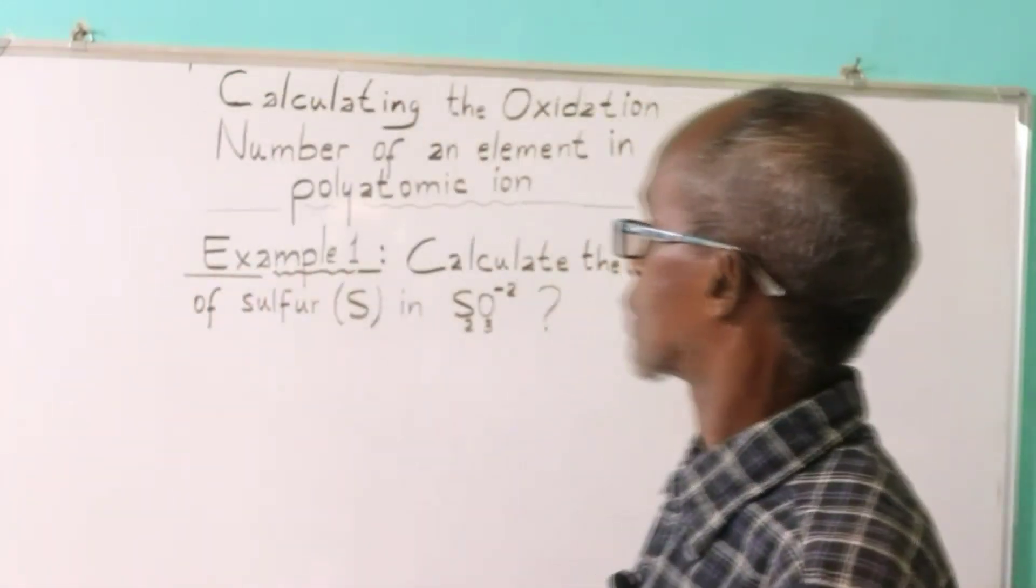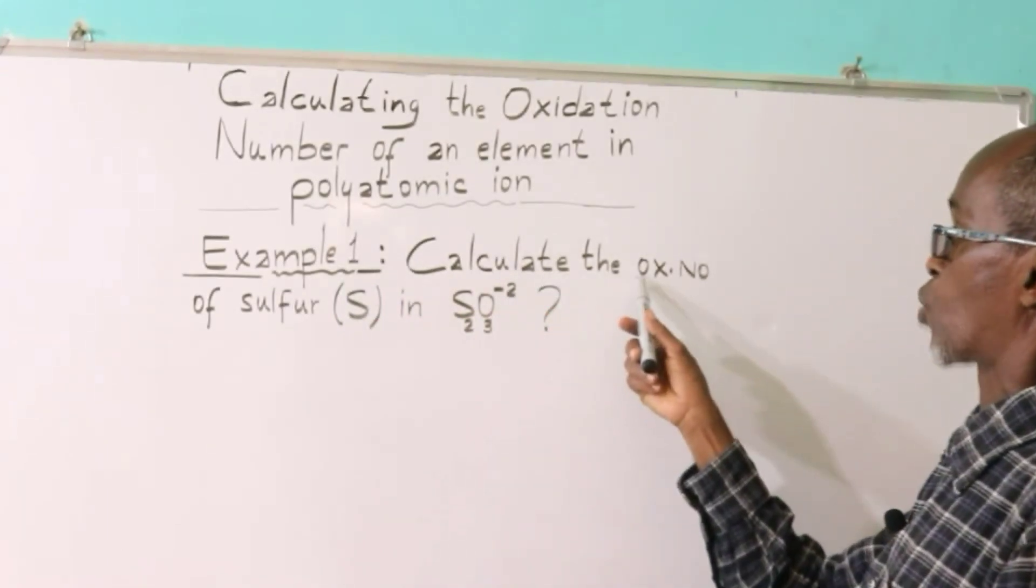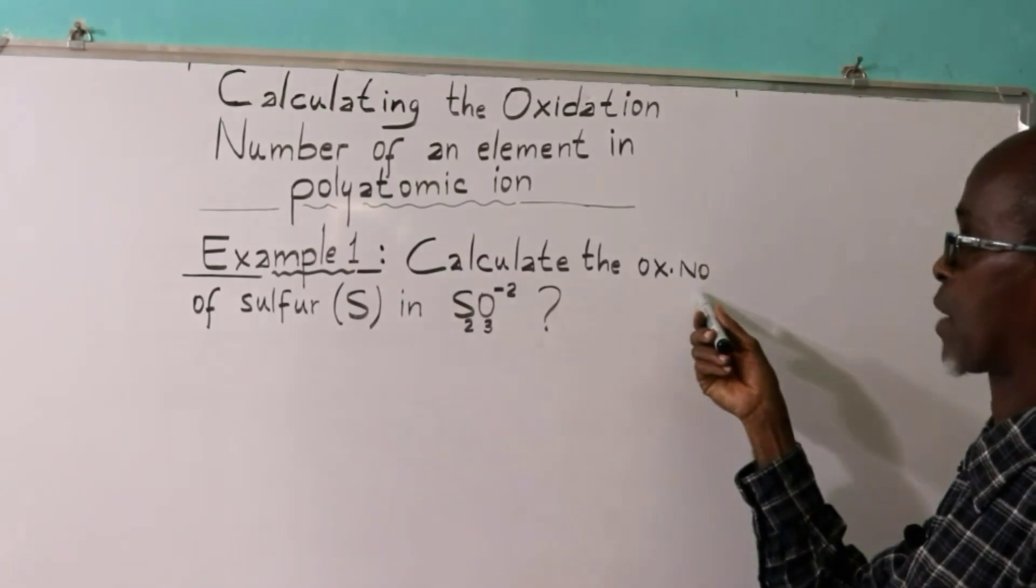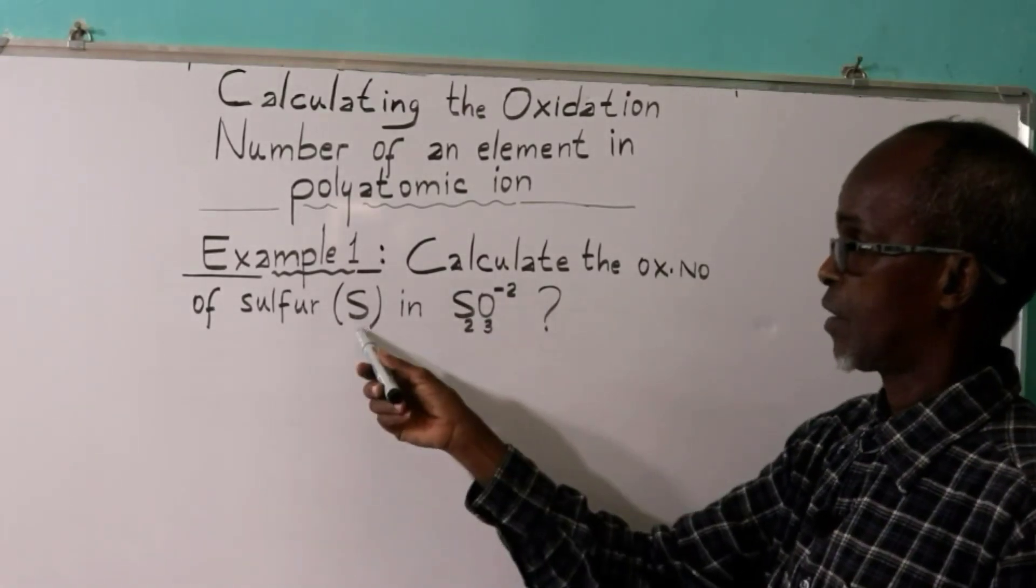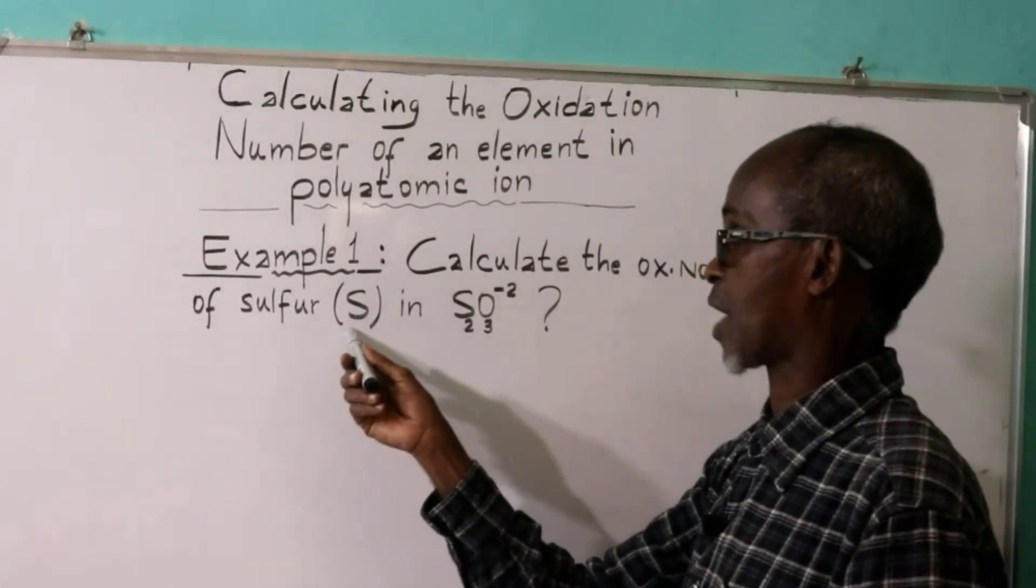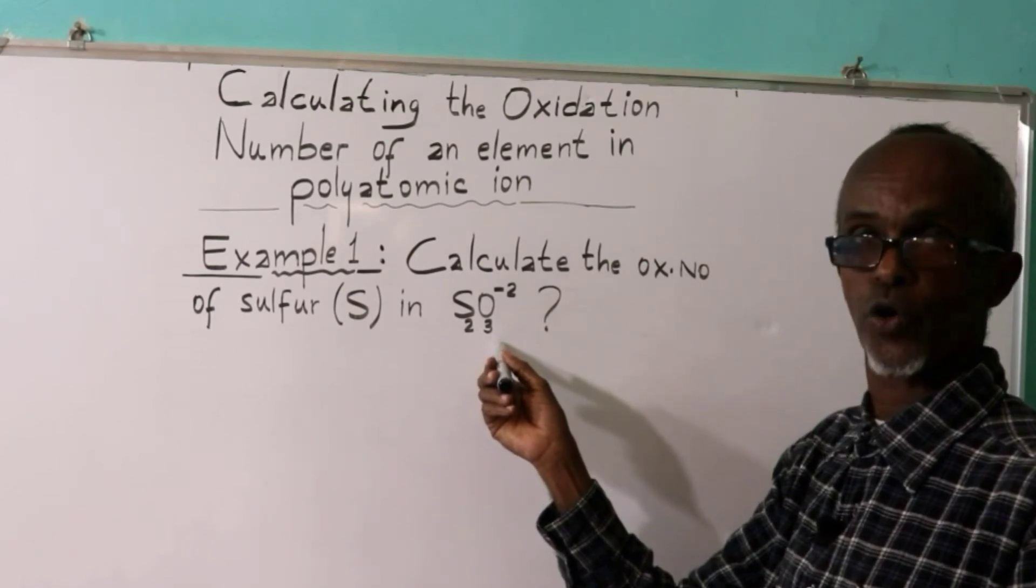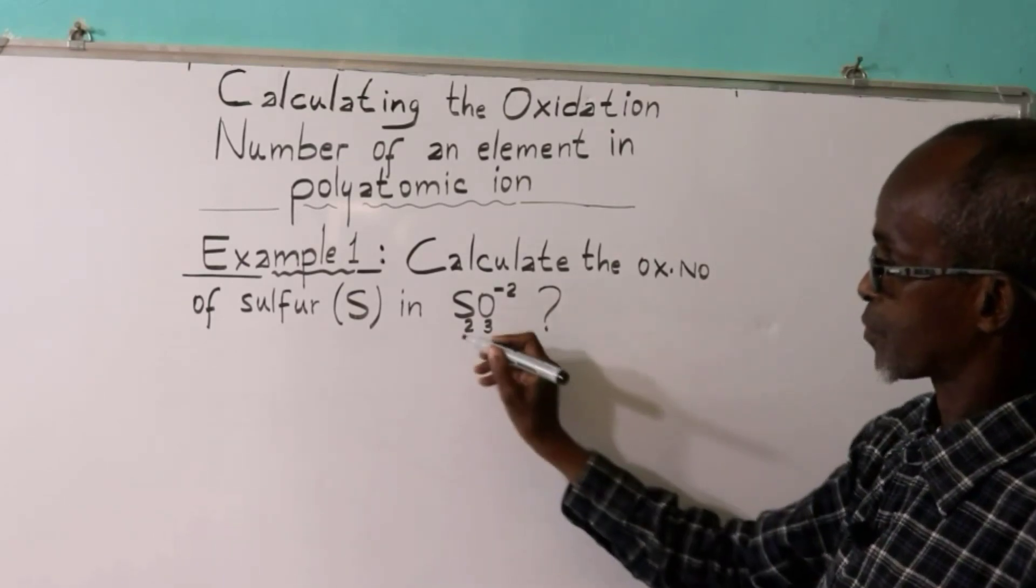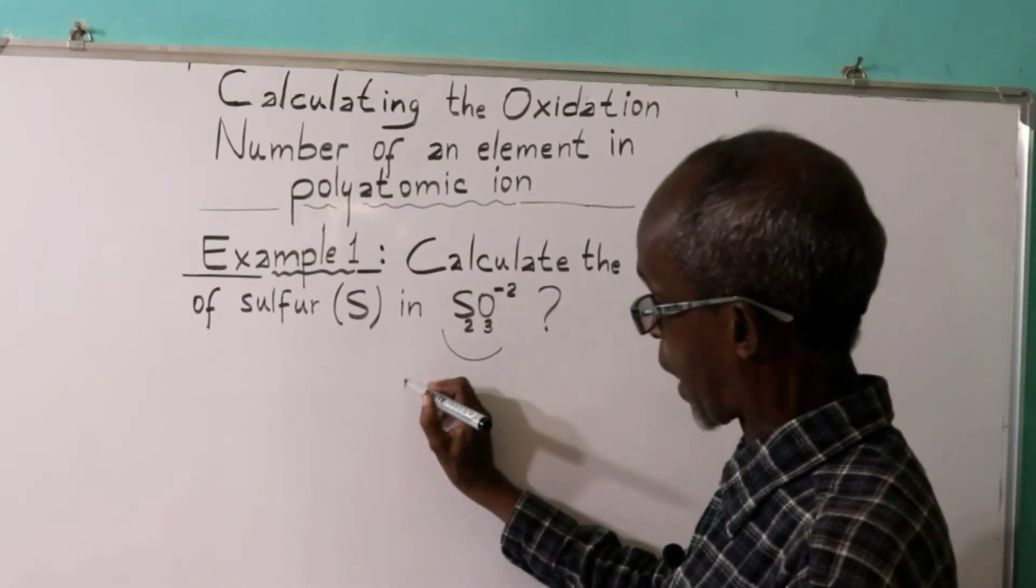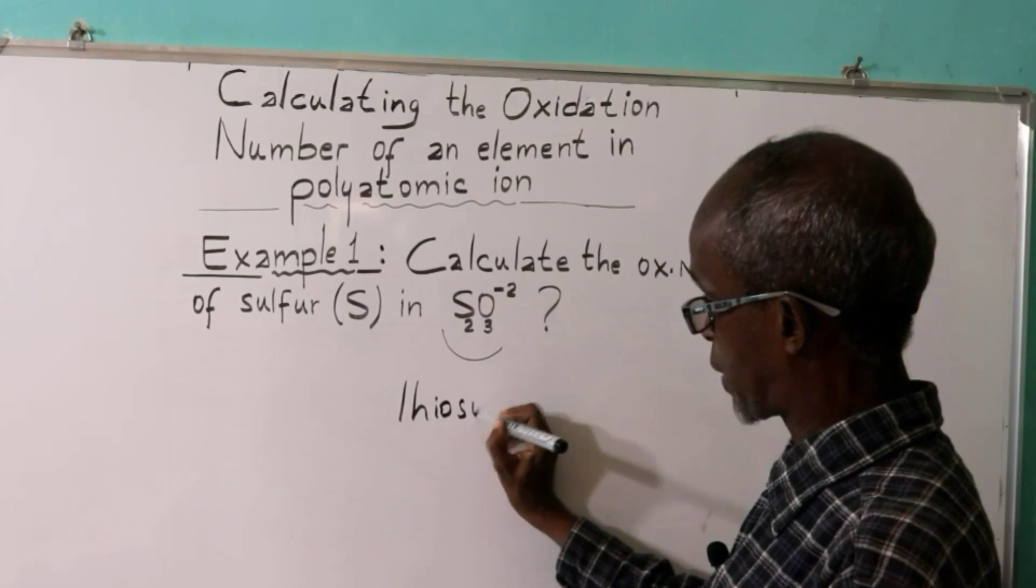Example number one: Calculate the oxidation number of sulfur in the thiosulfate ion. The thiosulfate is a polyatomic ion.